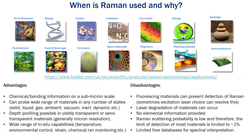So when else would you use Raman? There are a number of fields and examples shown on the Horiba webpage, and I welcome you to go visit to investigate some of these categories further. I've also listed out some of the advantages and disadvantages of this technique. One advantage is that it allows us to identify bonding information on a submicron scale, as shown in that previous example with the sulfur bacteria.